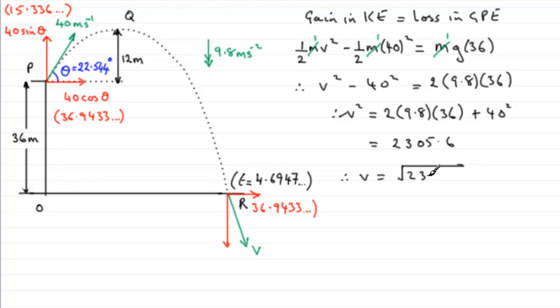If we square root 2,305.6, it ends up being 48.016 and so on. If we round this to two significant figures, it turns out to be 48 meters per second, to 2sf.